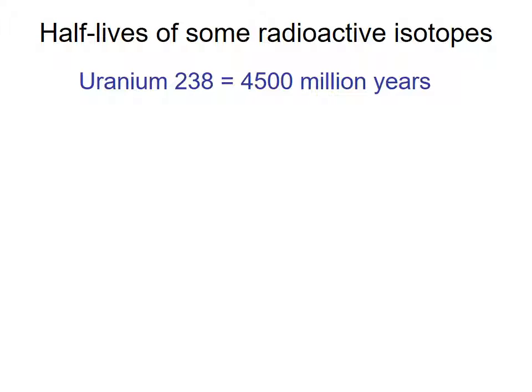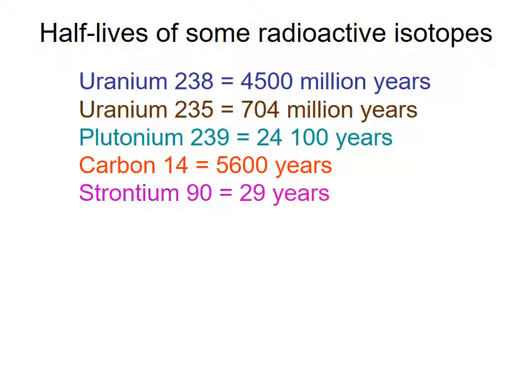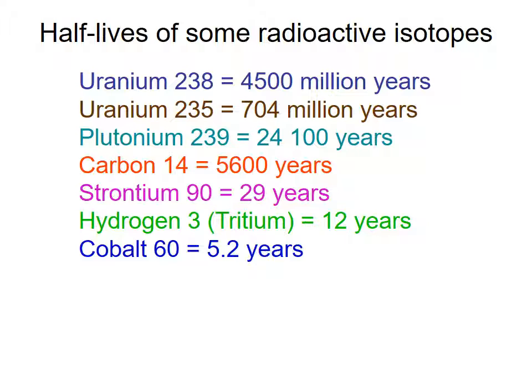So some half-lives. So uranium has quite a long half-life. So one atom of uranium-238 decays every 4,500 million years. U-235, 704 million years. Plutonium, 24,000 years. Carbon-14, 5,600 years. Strontium-90, 29 years. Hydrogen, 12 years.